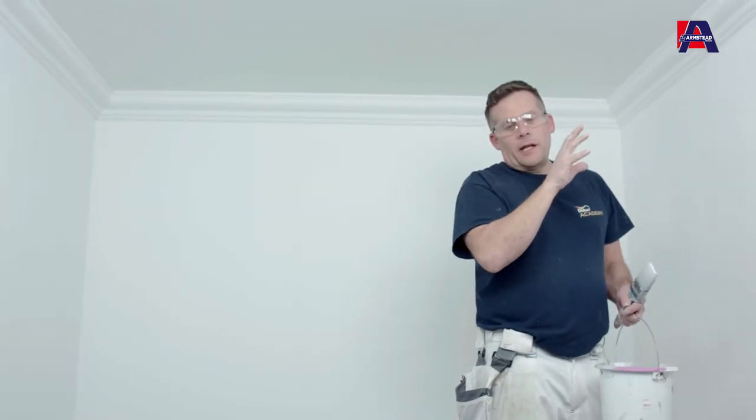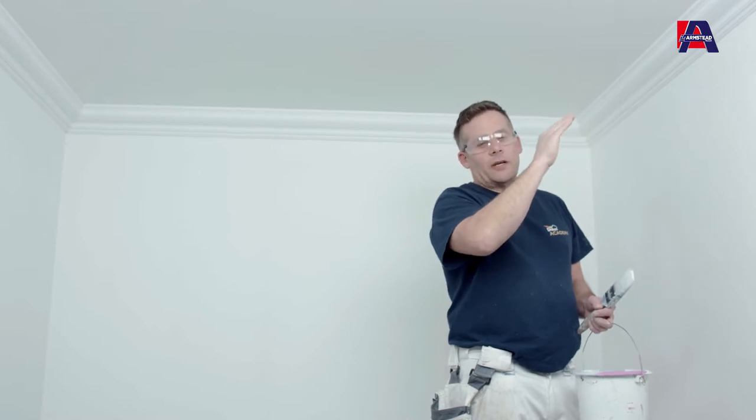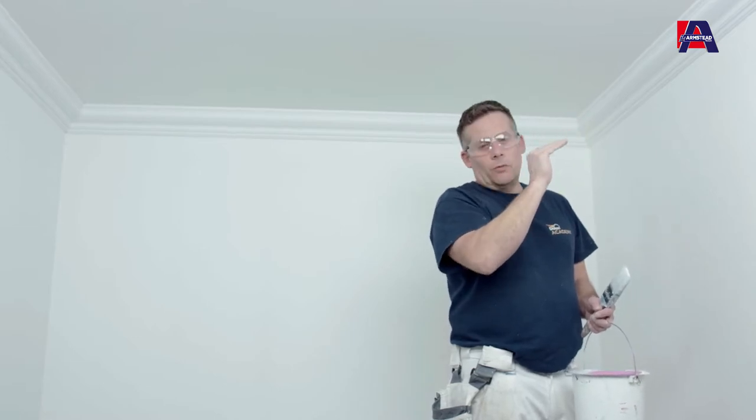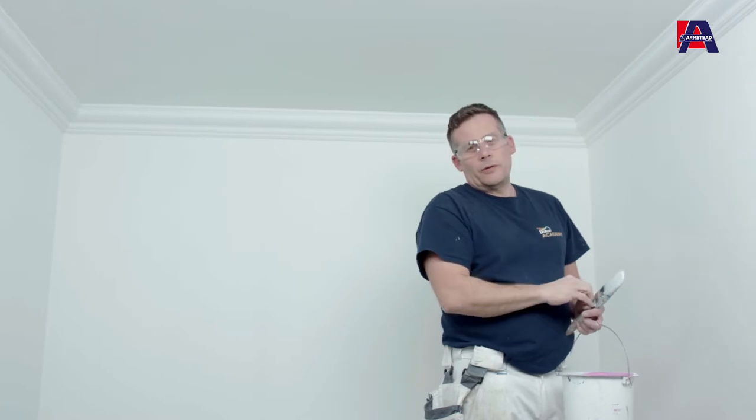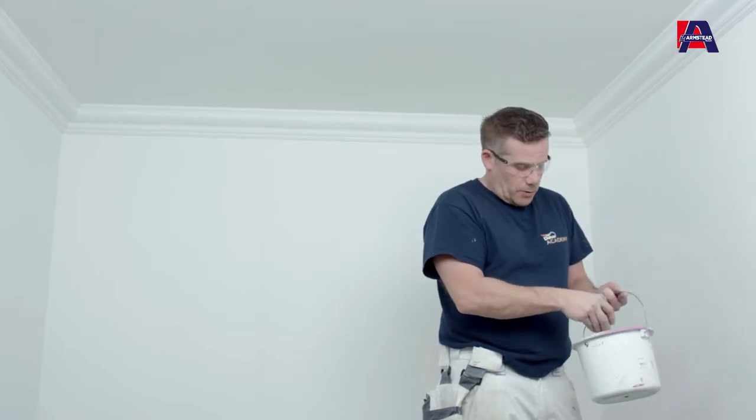But what we need to do is cut in. Now in this instance because we've already got a white ceiling and white walls I'm using grey just so you can see the process and what I'm doing. So to cut in, some of the paint goes onto the wall, over onto the coving and also slightly onto the ceiling which is where my roller is going to do most of the work.